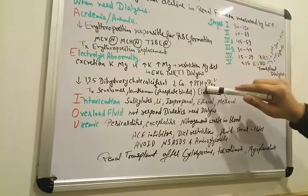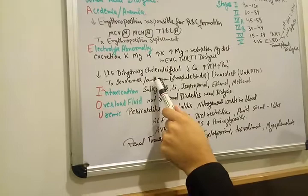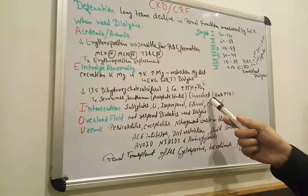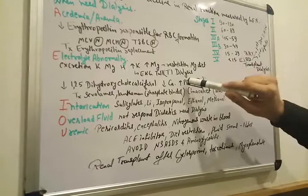So how to treat this condition? We can use Sevelamer, Lanthanum. These are the phosphate binders. When they bind with phosphates, we can treat hyperphosphatemia. Or we can say cinacalcet. Cinacalcet is used to block the parathyroid hormone. If it inhibits the parathyroid hormone, so there is no hyperphosphatemia.